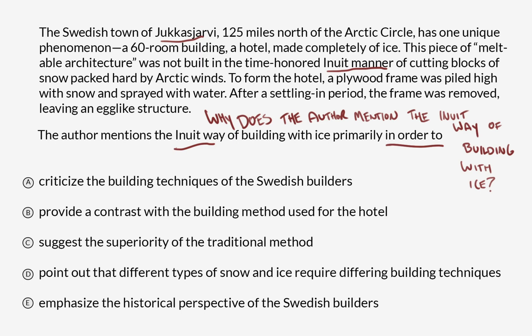I want to go back into the passage and see if I can identify an answer. Starting with the second sentence: rather than blocks of snow being quarried or cut, the entire structure is made all at once. So it's showing the difference between this snow hotel and the Inuit way of making buildings out of ice and snow. The way I would say it: to show the difference between the two building techniques.